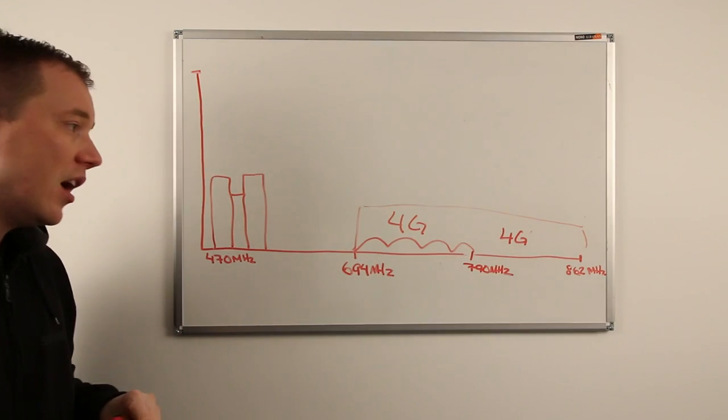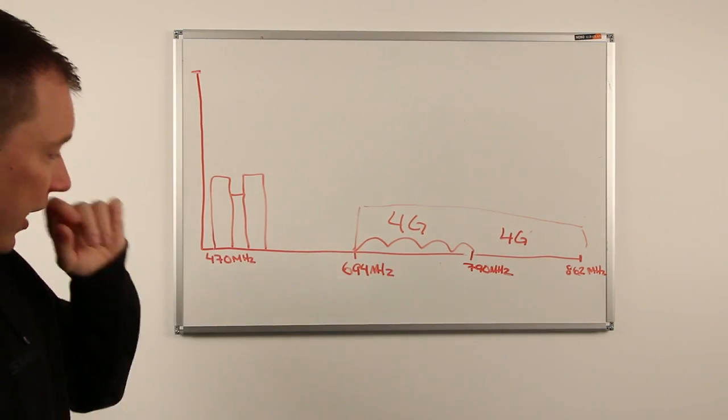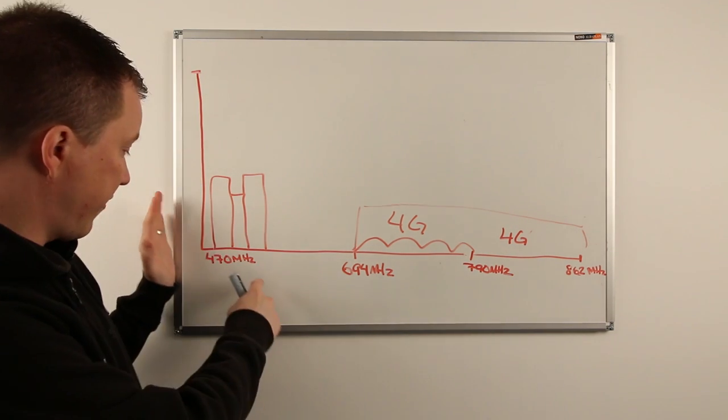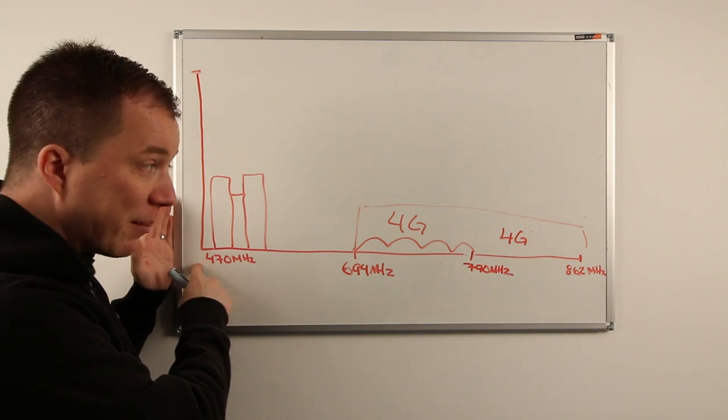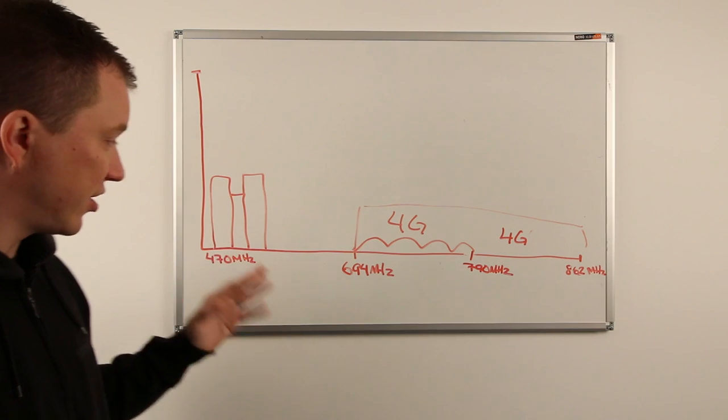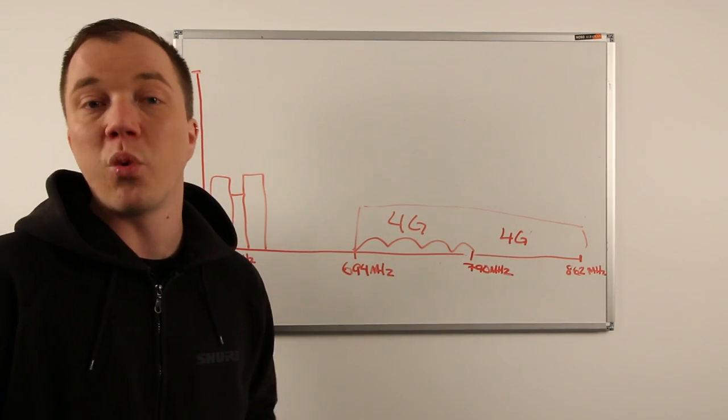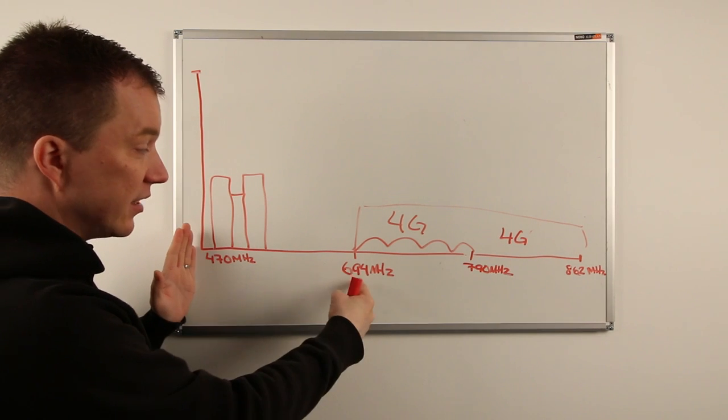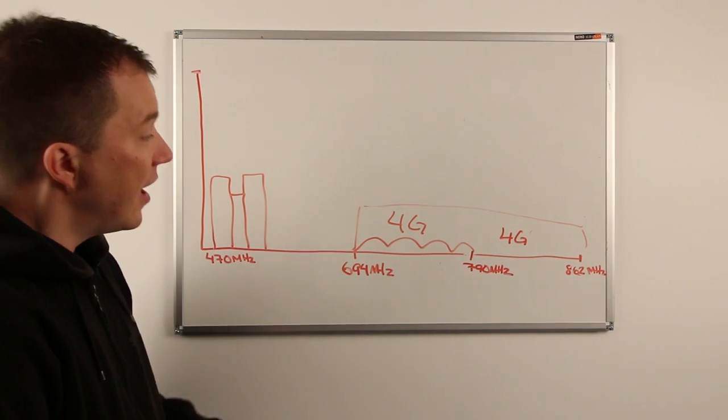So now, if you look at the graph, over the past handful of years, we as users of professional wireless microphones and in-ears have gone from having access to 470 meg to 862 meg, to now only having access starting around 2019, 2020, to 470 to 694 megahertz.